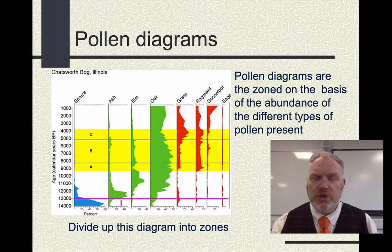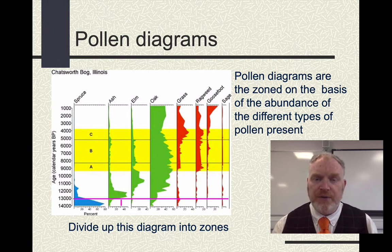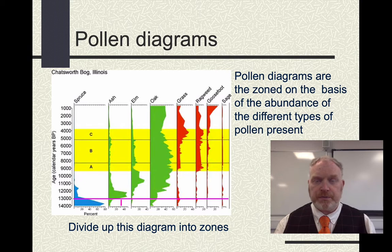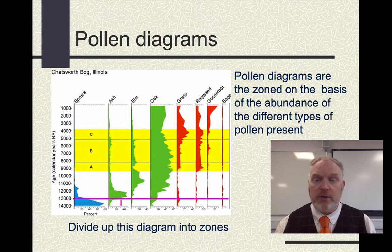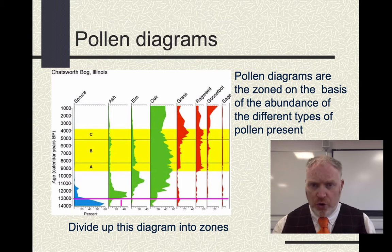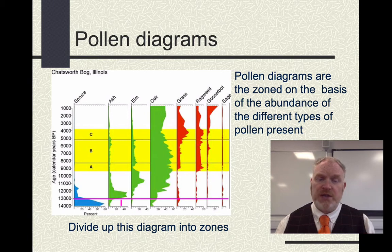We talked already about zone one: a coniferous spruce forest — the type of vegetation community we'd expect now perhaps in the far north of Scandinavia. This is a northern vegetation community, one that perhaps represents cold conditions.